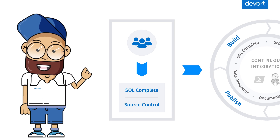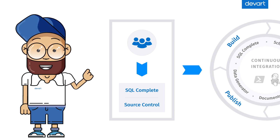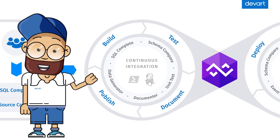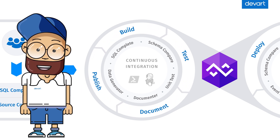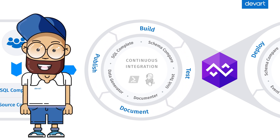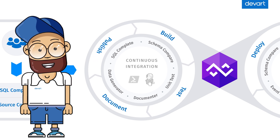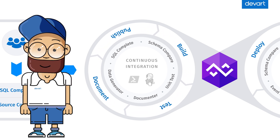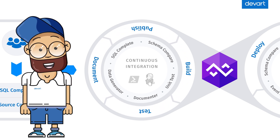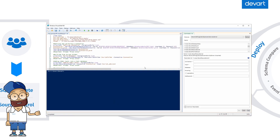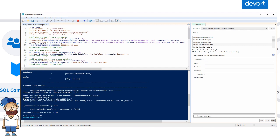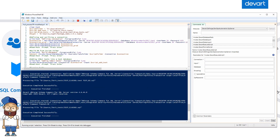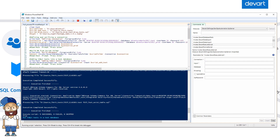Next, we'll utilize the dbForge DevOps Automation PowerShell module, which will help us set up the continuous integration process. We'll pull all changes from the repository, build the project, and deploy it on a test server with dbForge Schema Compare. Next, we'll roll out the tSQLt framework and use dbForge Unit Test to perform tests on the deployed database. With the help of dbForge Data Generator, we'll upload test data to the database and perform the tests.